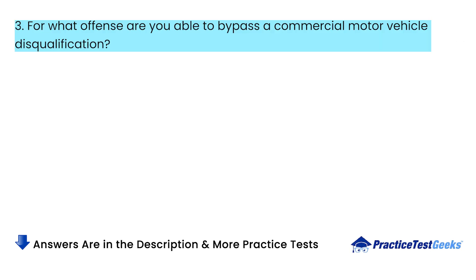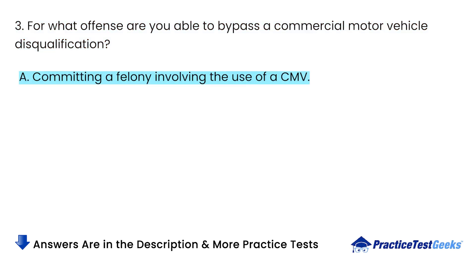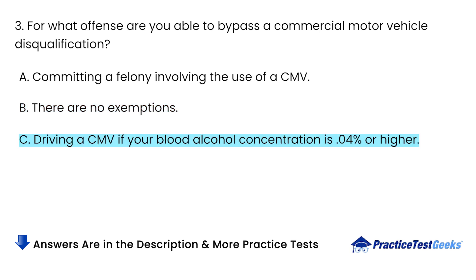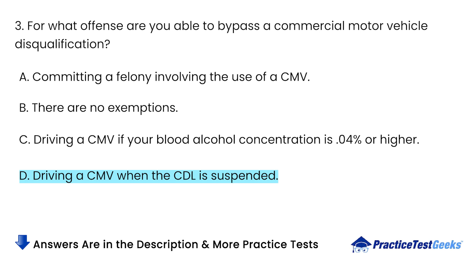For what offense are you able to bypass a commercial motor vehicle disqualification? A. Committing a felony involving the use of a CMV. B. There are no exemptions. C. Driving a CMV if your blood alcohol concentration is 0.04% or higher. D. Driving a CMV when the CDL is suspended.